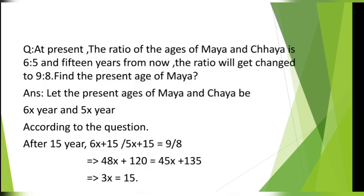The first question is: At present, the ratio of the ages of Maya and Saya is 6 to 5. And 15 years from now, the ratio will become 9 to 8. Find the present age of Maya. Now, let me show you the solution to this question.